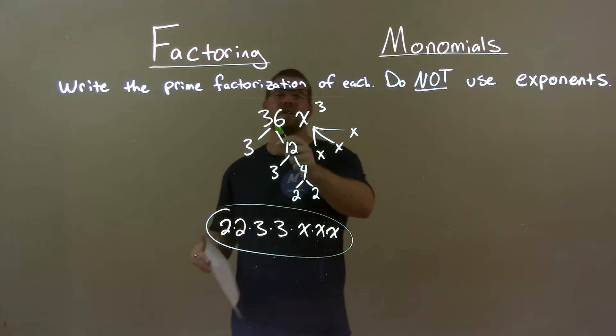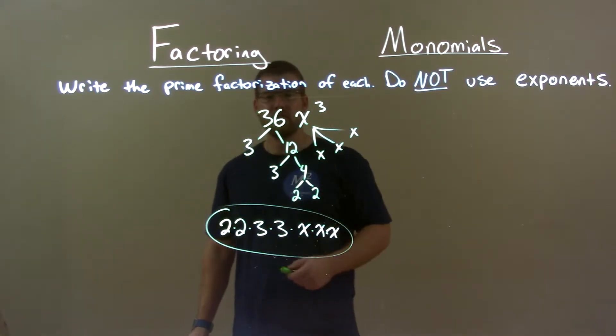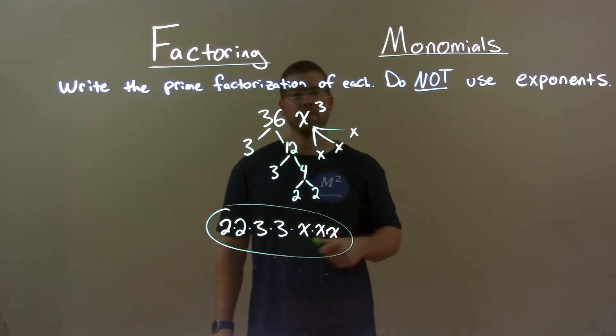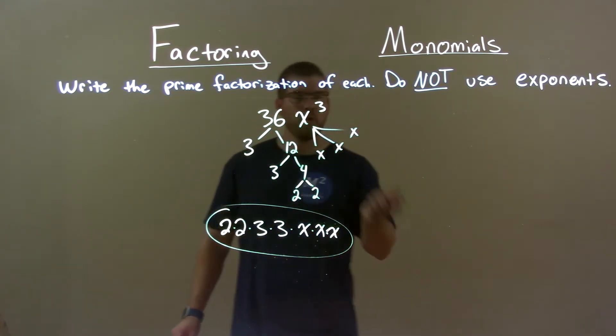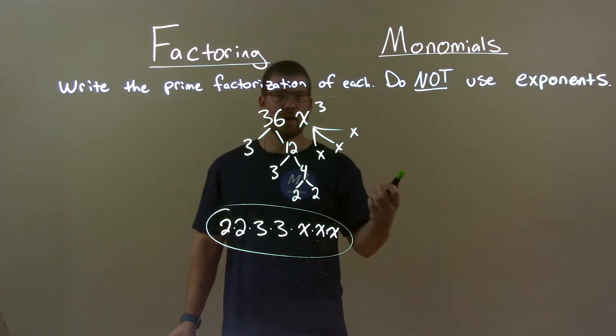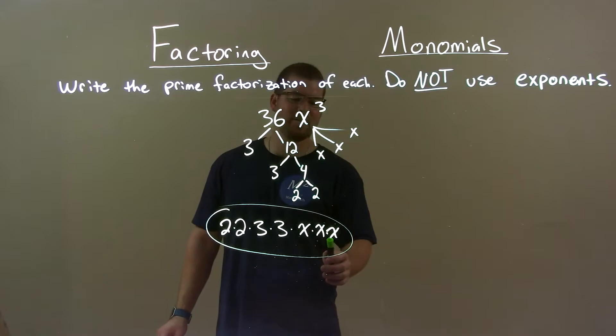Quick recap: we're given 36x to the third and we have to find the prime factorization of it. 36 becomes 3 times 3 times 2 times 2, and x to the third is x times x times x. Rearrange all of that to get our final answer: 2 times 2 times 3 times 3 times x times x times x.